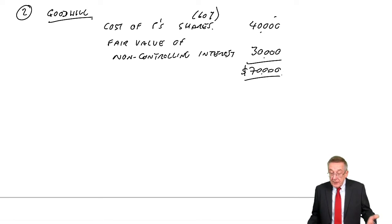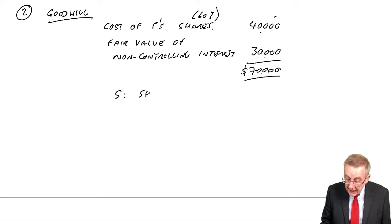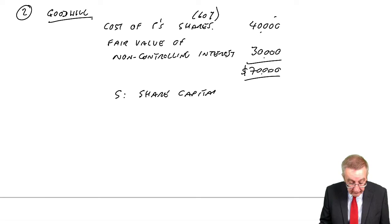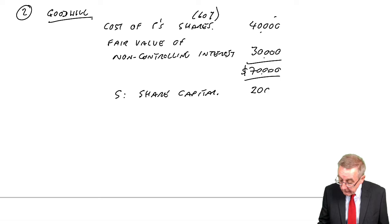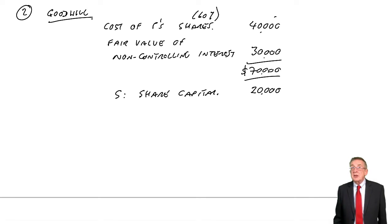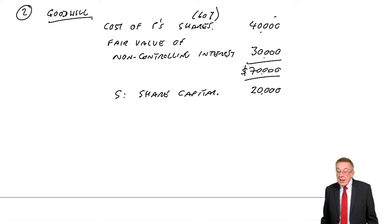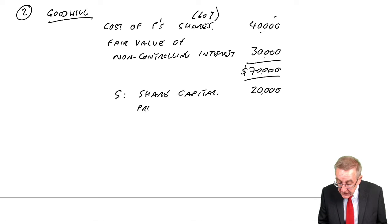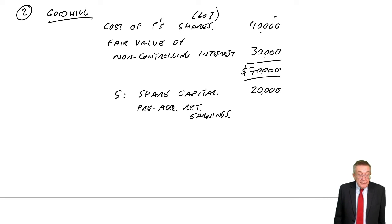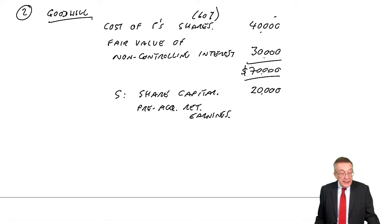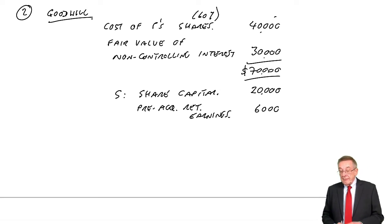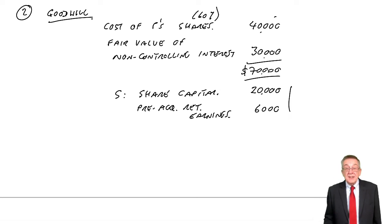What value would have been in their statement? As far as S is concerned, we take S's share capital: 20,000. When we were going through the previous chapter, we always assume the share capital hasn't changed — it was 20 now, so it must have been 20 at the date of acquisition. In addition, we take the pre-acquisition retained earnings. The shares were acquired when the retained earnings stood at 6,000. And so at the date of acquisition, the net assets of S in their statement would have been 26,000.